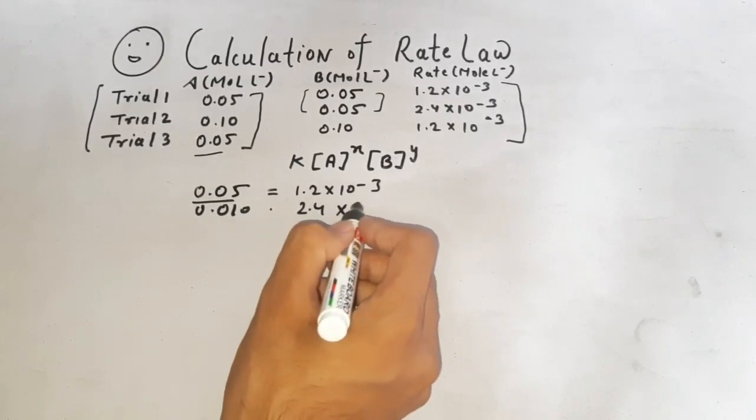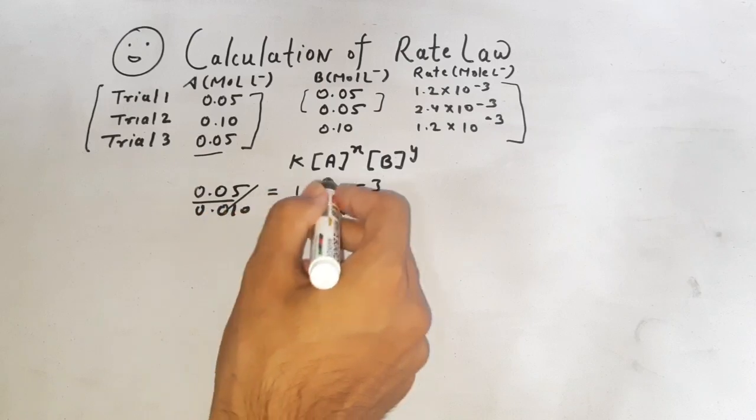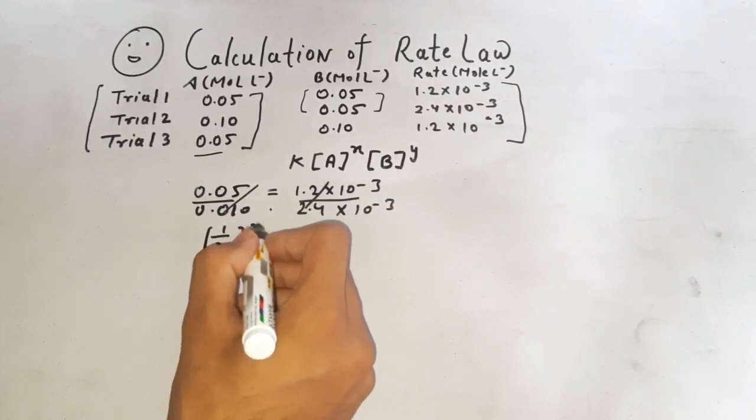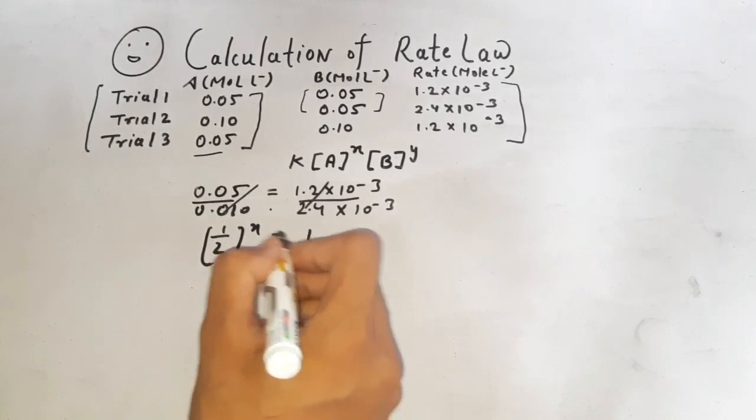By solving this, a value comes 1 by 2 and 1 by 2.